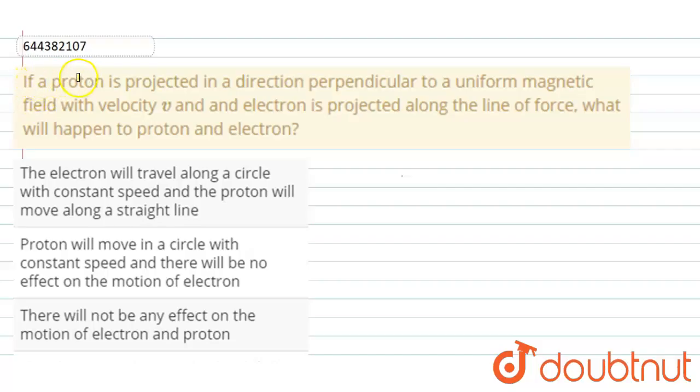So here's the question: If a proton is projected in a direction perpendicular to a uniform magnetic field with velocity v, and an electron is projected along the straight line of force, what will happen to proton and electron?